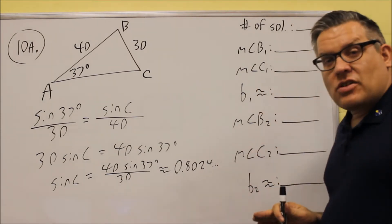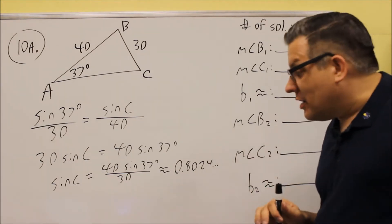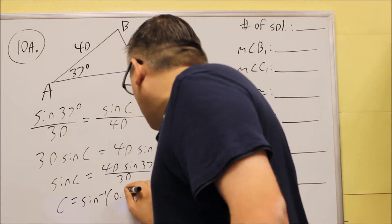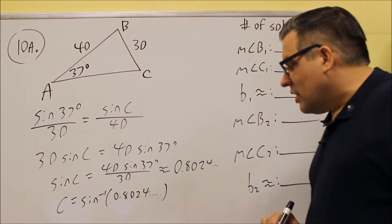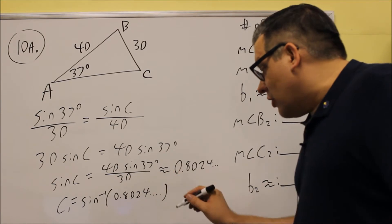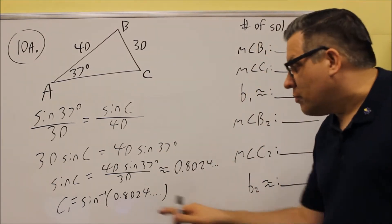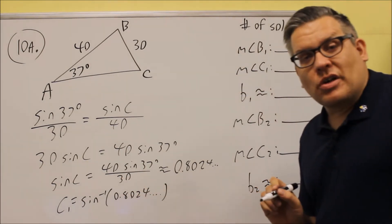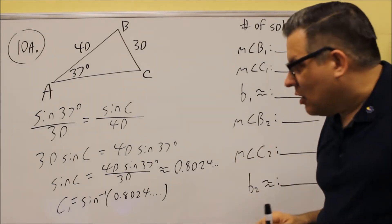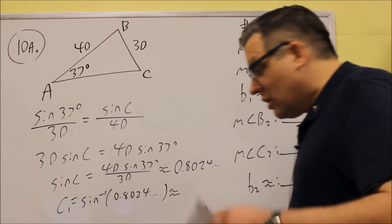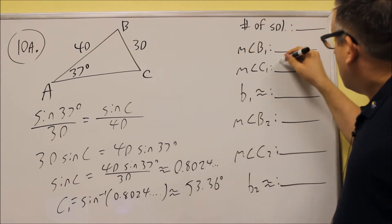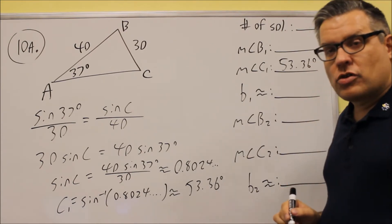That decimal 0.8024 is sine(C), not the angle C itself. To find the angle, we take the inverse sine: C = arcsin(0.8024). If the value inside the parentheses were greater than 1 or less than −1, the calculator would give an error, meaning no solution. Since we do get a valid result, we have at least one solution. C1 = 53.36 degrees, rounded to two decimal places.